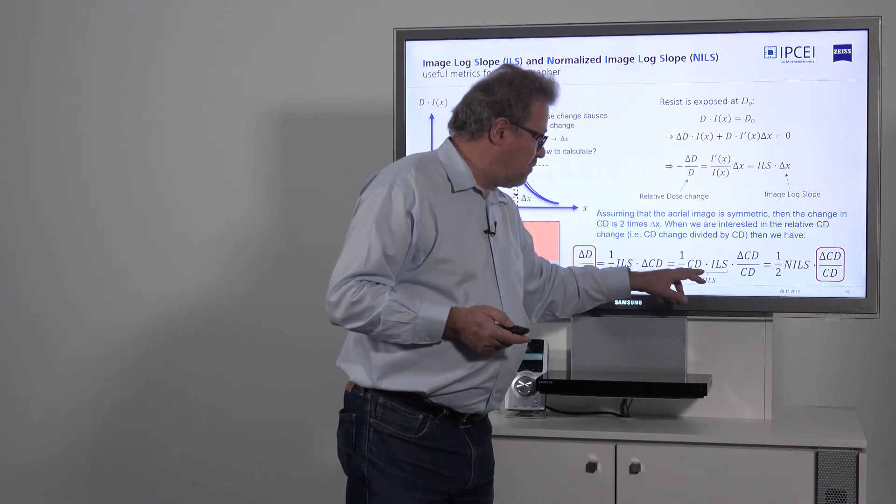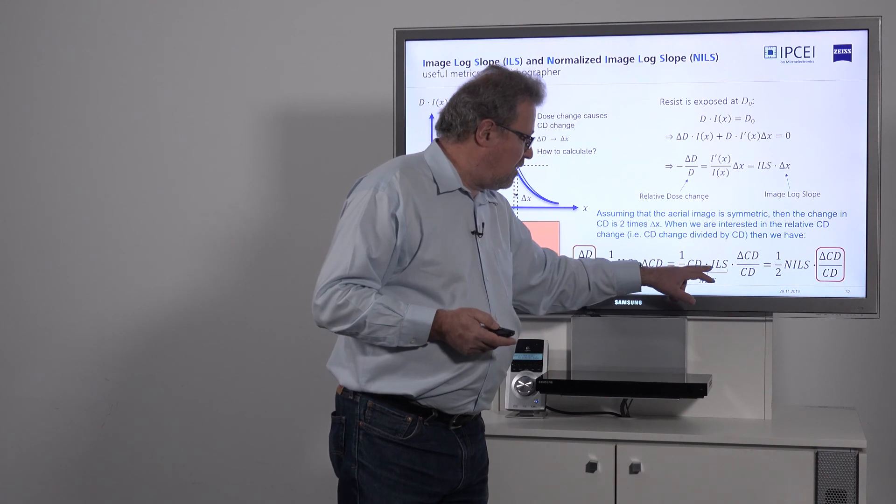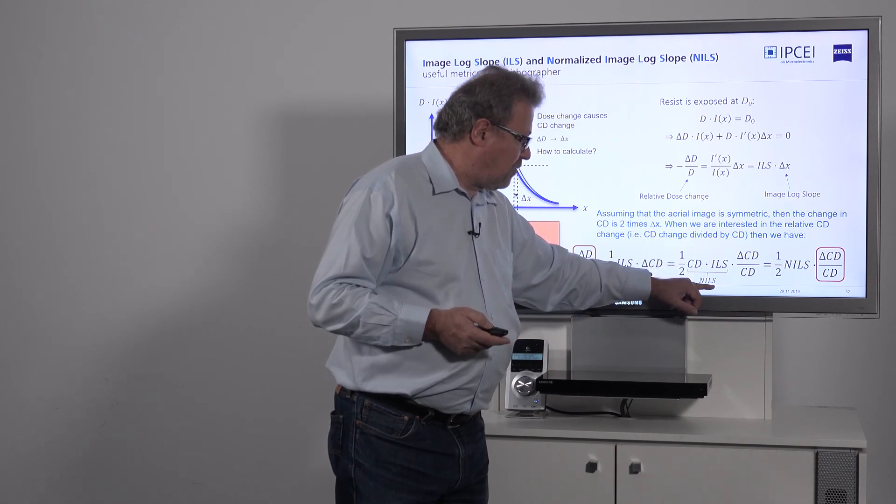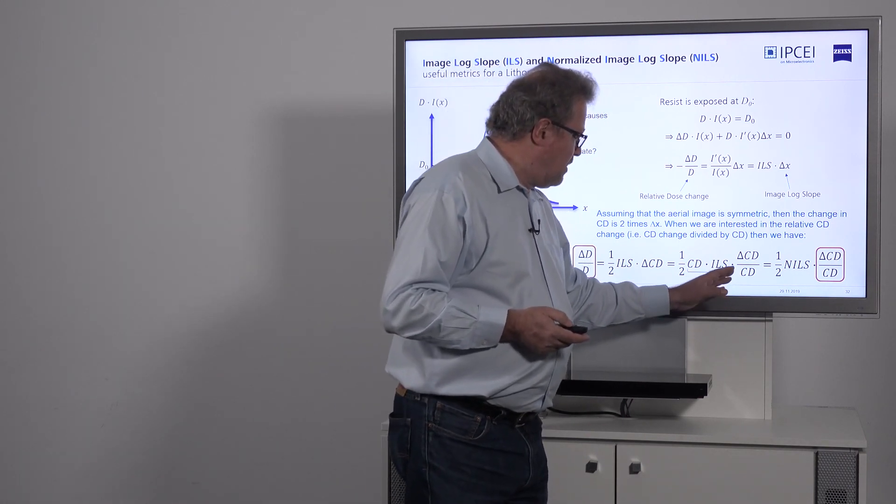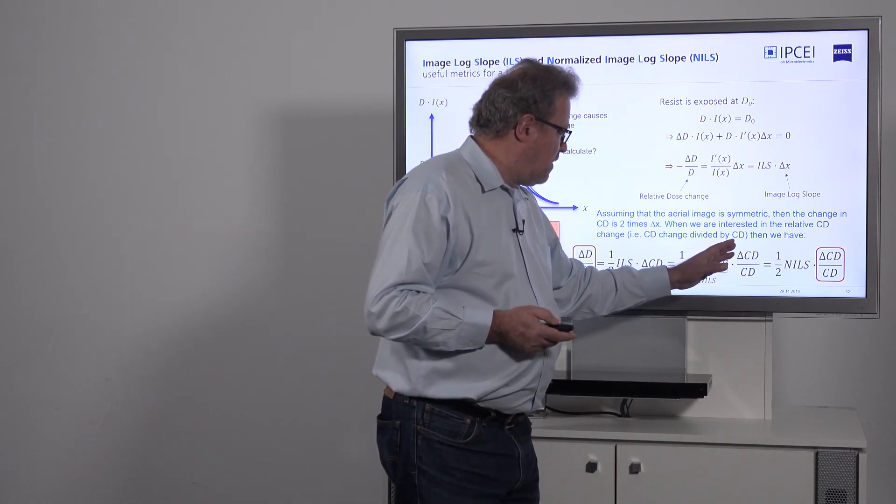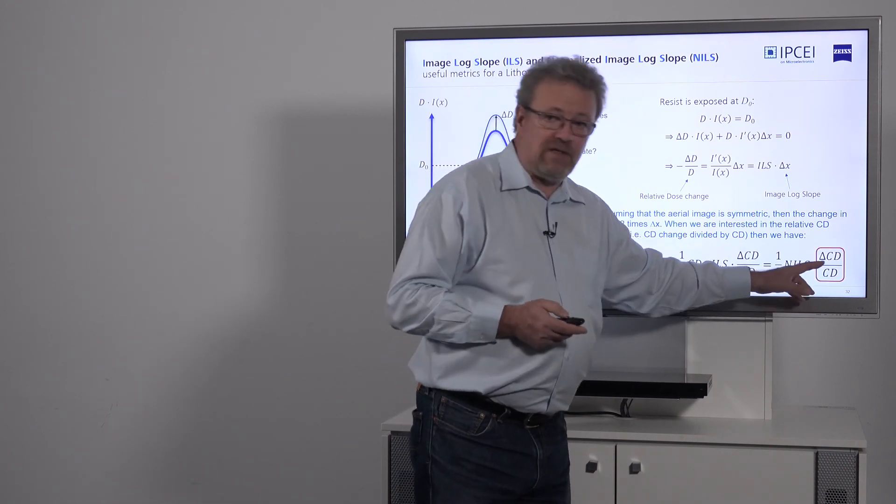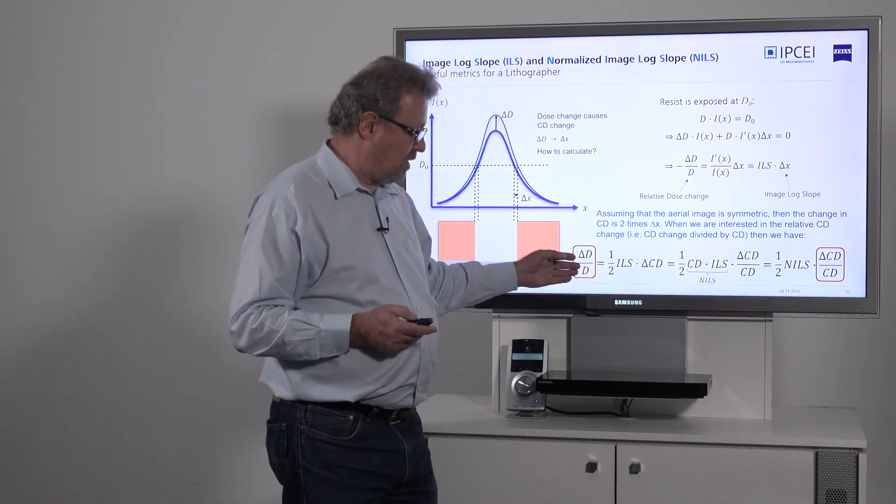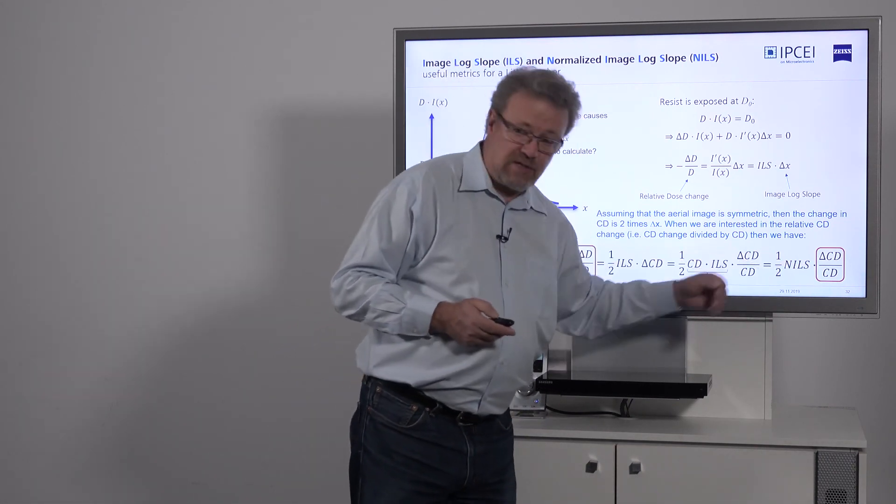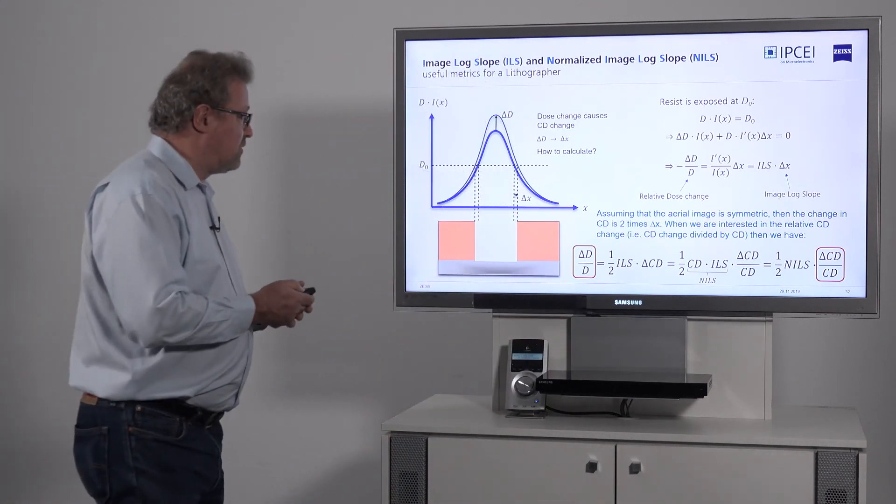To correct this, I have to multiply it somewhere—here we have it. So the CD times the ILS, that's what the lithographer calls NILS, normalized image log slope. What it really is: it relates the relative feature size change with the relative dose change. The NILS basically tells you how a dose change turns into a feature size change or vice versa.